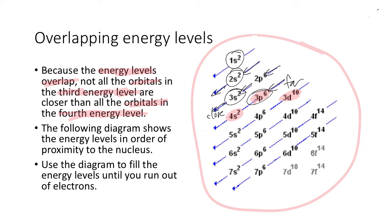Let's do oxygen with 8 electrons. It would be 1s2, 2s2, 2p4, because we only need 8 electrons total. That gives us 2 + 2 + 4 = 8. We'll be practicing this a lot in class.